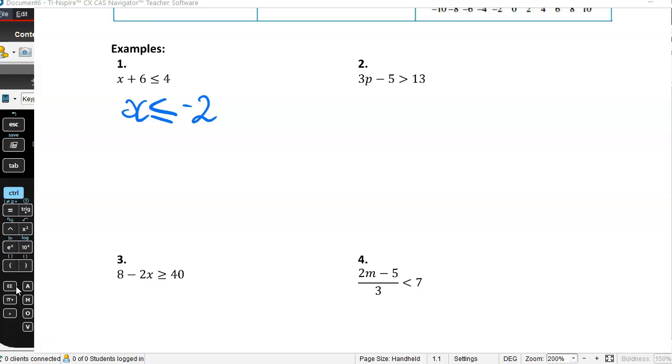Example 2. I've got 3p minus 5 is greater than 13. So 3p is greater than 18. To get a solution for p, I divide both sides by 3. So p is greater than 6. If it was 6, that would be 18 minus 5 is 13, which is not greater than 13. So it must be greater than 6.